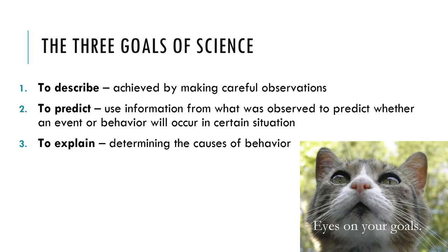The three goals of science. The first and most basic goal of science is to describe. This goal is achieved by making careful observations. As an example, perhaps I'm interested in better understanding the medical conditions that medical marijuana patients use marijuana to treat.